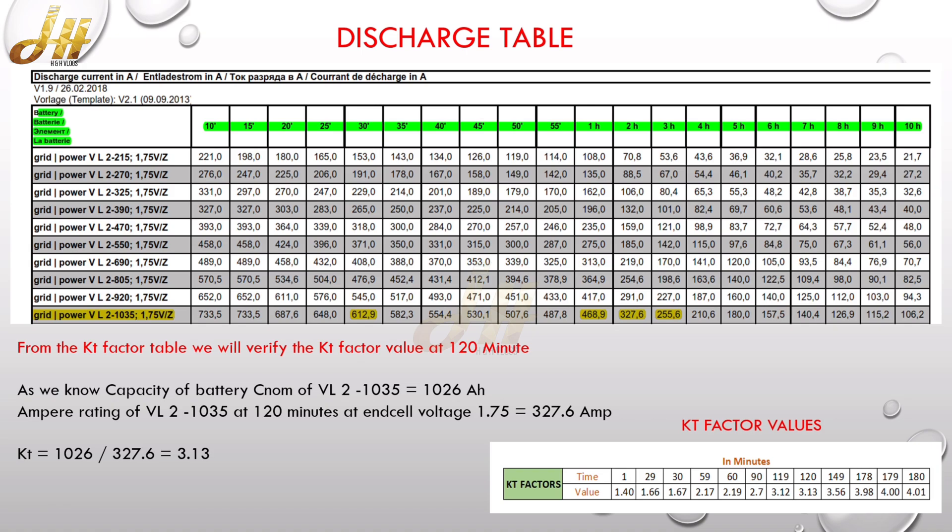For 120th minute, the KT factor value of the particular cell is 3.13. So now we will check how this can be derived. So you can see that normal capacity of this battery is 1026 Ah, and from the discharge table on 120 minutes, which is the two hour, the discharge capability of that battery is 327.6 ampere.